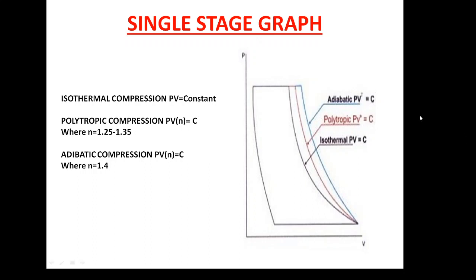So polytropic comes between the two graphs — isothermal and adiabatic. The equation is PV = nRT, so nRT is constant. For isothermal: PVⁿ = constant. For polytropic: PVⁿ = C, where n is equal to 1.25 to 1.35. And for adiabatic compression: PVⁿ = C, where n is 1.4.